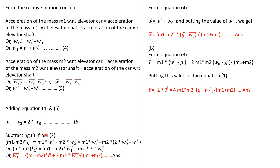We will subtract equation 3 from equation 2. Going through that subtraction, and finally solving, we get W1 equals (M1 minus M2) times g plus 2 times M2 times W0, all divided by (M1 plus M2), in vector form. This is your first answer as asked in the question.